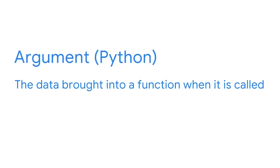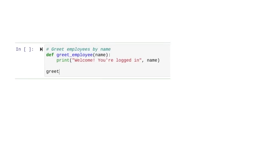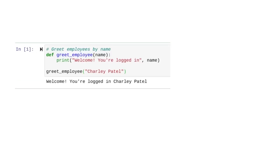Now that our function is set up, we're ready to call it with a specific argument. In Python, an argument is the data brought into a function when it is called. For example, earlier when we passed 3 and 7 into the range function, these were arguments. In our case, let's imagine we want to greet an employee named Charlie Patel. We'll call our greet employee function with this argument, and Charlie Patel gets a personalized welcome message.